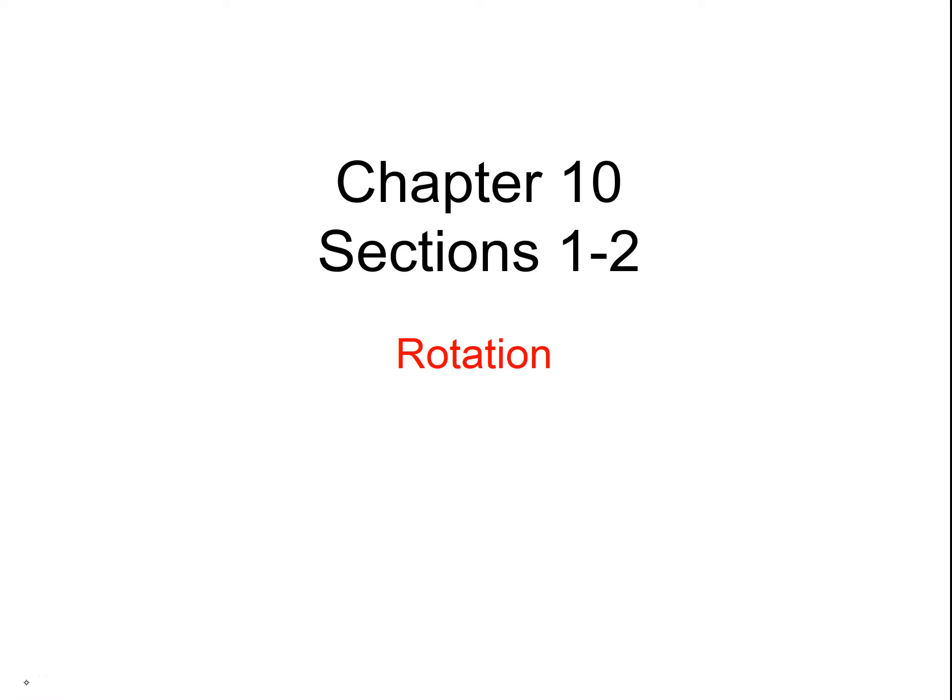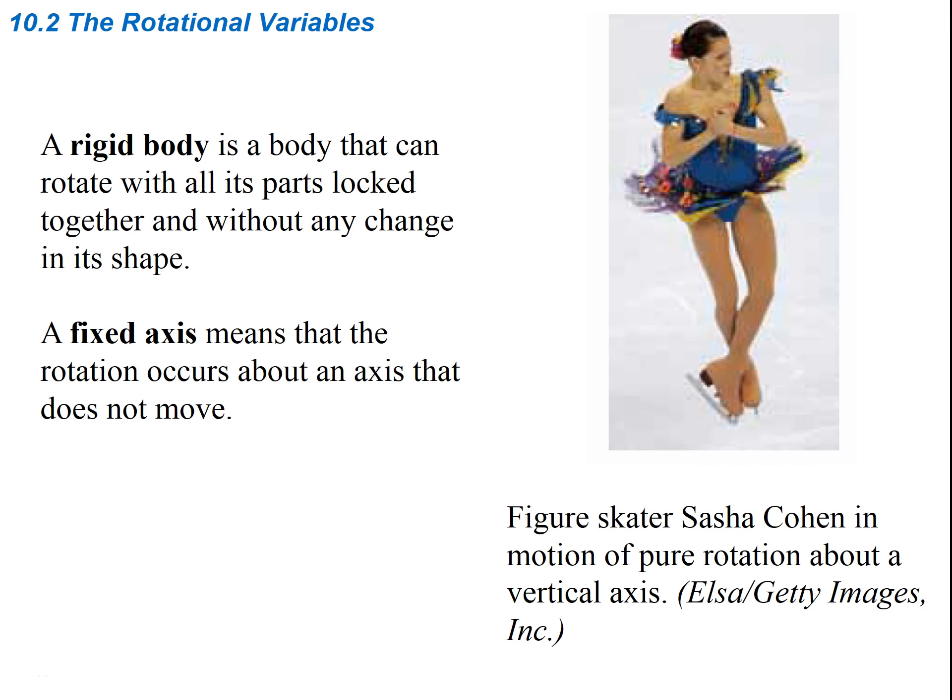In this lecture we're going to start chapter 10 covering the first couple sections on rotation. We'll first look at what the rotational variables are, and we need to define a couple vocabulary terms. A rigid body is a body that can rotate with all its parts locked together without any change in its shape. A fixed axis means that the rotation occurs about an axis that does not move.